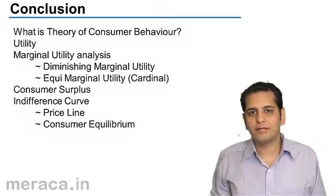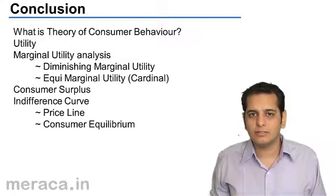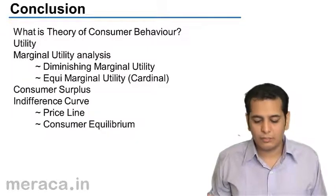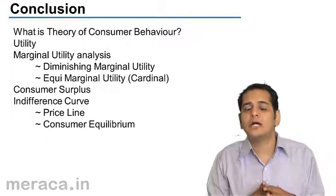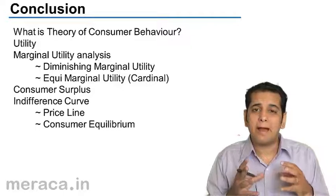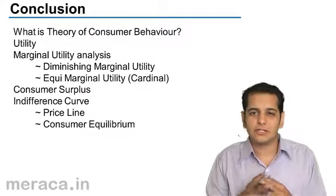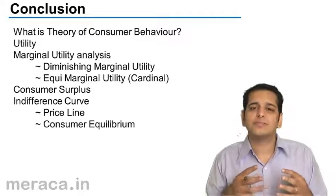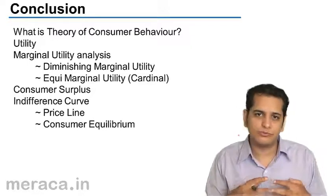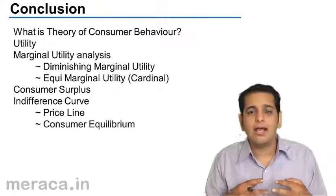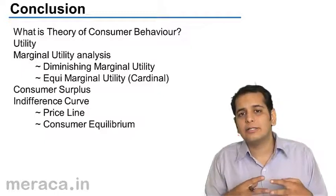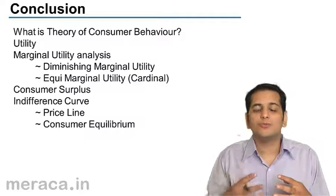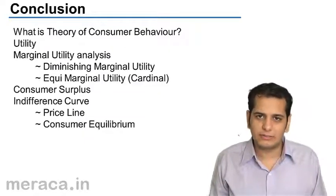Let's conclude what we have done in the unit: theory of consumer behavior. In this chapter, we have learned how a consumer maximizes his satisfaction. A consumer gets satisfaction from whatever he consumes, and in that consumption, he decides as to what to consume to maximize his satisfaction level.